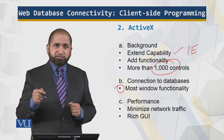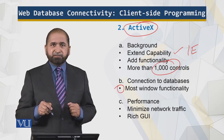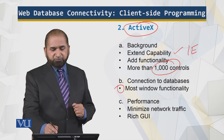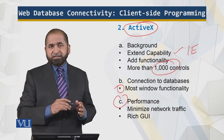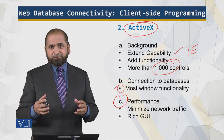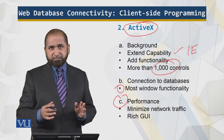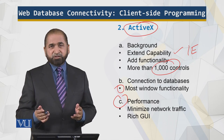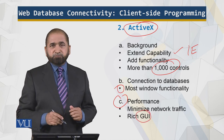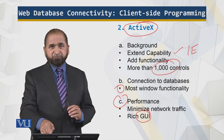ActiveX is very powerful because it has most of the Windows functionality, meaning through IE with ActiveX I can go to my hard disk, access files, and even save files. For performance, it minimizes network traffic by collecting control information and then sending it, which reduces network traffic, improves performance, and offers a rich graphical user interface.